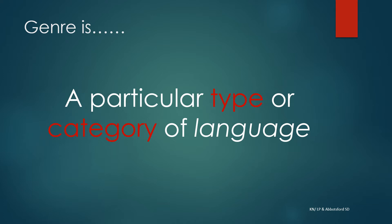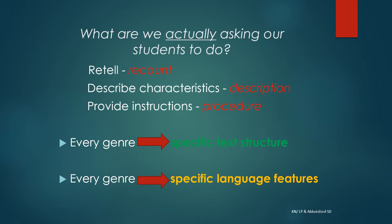There are about seven genres that we typically ask our students to address. We can ask ourselves: what are we actually asking our students to do? Are we getting them to retell a series of events? This is recount text. Are we getting them to describe the characteristics of an animal or person? This is description text. Are we asking them to provide instructions on how to make or do something? This is procedural text. Every genre has a specific text structure and specific language features.